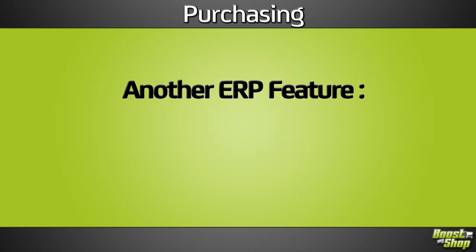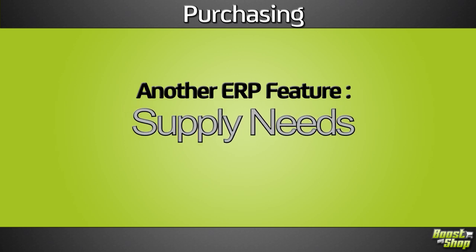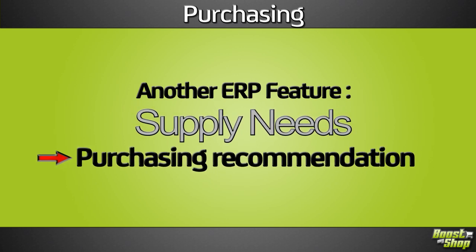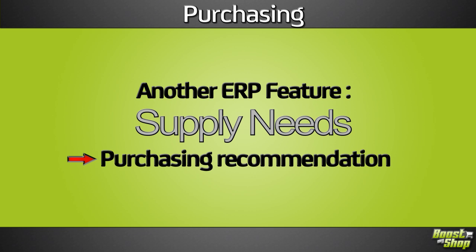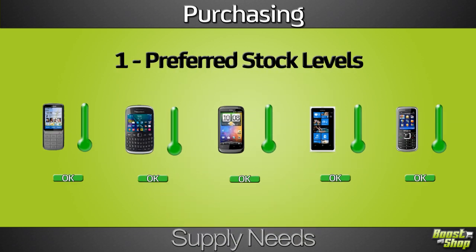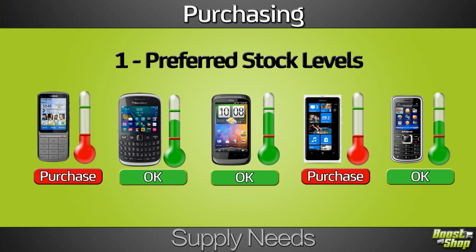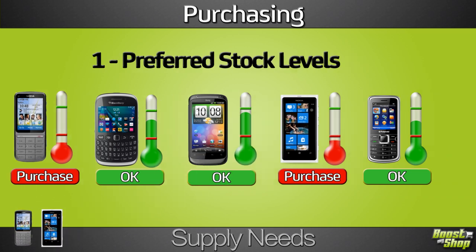Another amazing ERP feature is the supply needs screen. It contains purchasing recommendations based on two criteria. Preferred stock levels: for each product, you can set up a warning and an ideal stock level. When the product stock level reaches this limit, ERP will ask you to purchase the product to get back to the ideal stock level.